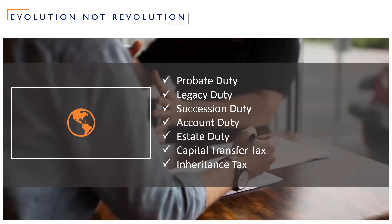We've had three main taxes. We've had estate duty in the 1890s, which was the first modern consolidation of all previous legislation. Then in the 1970s, the Labour government introduced capital transfer tax, which attempted to merge some features of a wealth tax with the old estate duty principles. And finally, in the 1980s, the new Conservative government decided to simplify capital transfer tax — starting by renaming it as inheritance tax and then lessening its impact quite significantly.